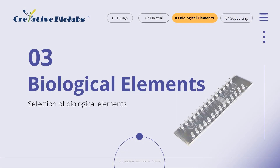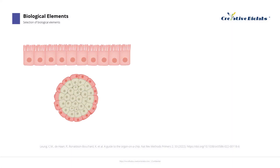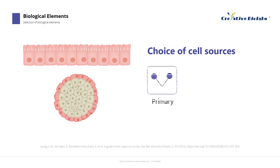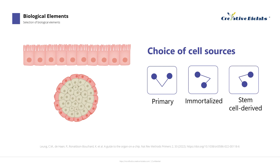The third point is the selection of OOC biological elements. We mainly discuss the option of isolated cells, since they are more commonly used in OOC. The choice of cell source requires a balance between biological functionality and practical operability of the device, mainly primary cells, immortalized cells, and stem cell-derived cells.